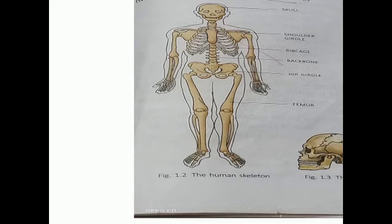The skeletal system can be compared to the framework of a painting. The frame provides support and protection to the painting. A group or set of bones makes up the skeletal system.